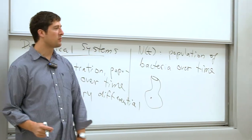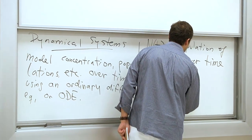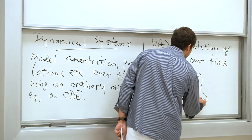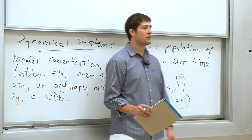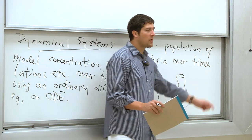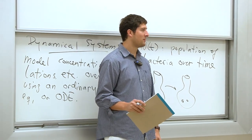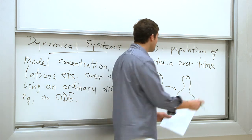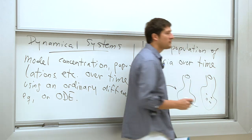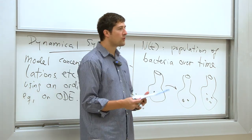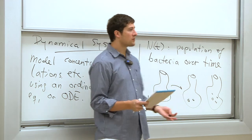Let's say you start with just one bacterium. After a while you wait and you get two bacteria. Let's say that time was two hours. After another two hours you don't get three — you get four, right? And the same thing over and over. So this growth is what we call exponential.